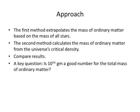There are two approaches used in the calculation. The first method extrapolates the mass based on the mass of all stars. The second approach was totally different, and it calculated the mass from the universe's critical density. We will then compare the results. The key question: is 10 to the 56 grams a good number for the total mass of ordinary matter?